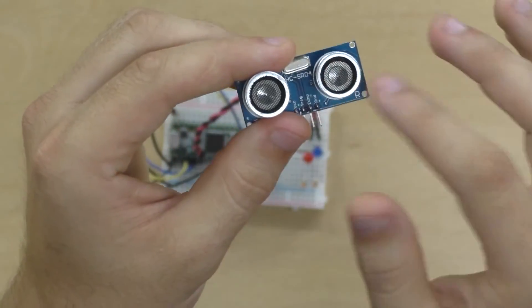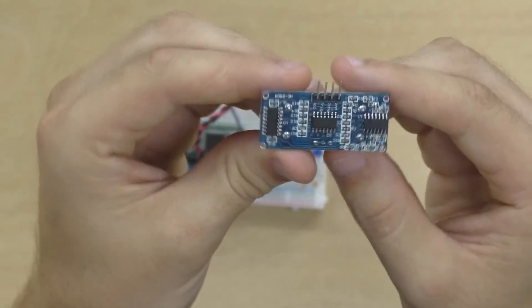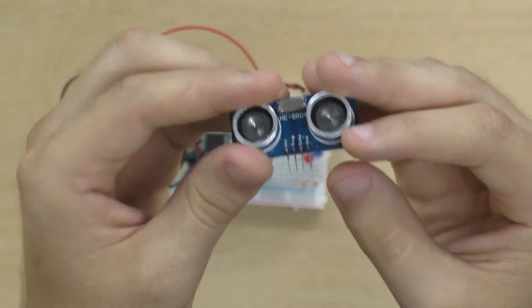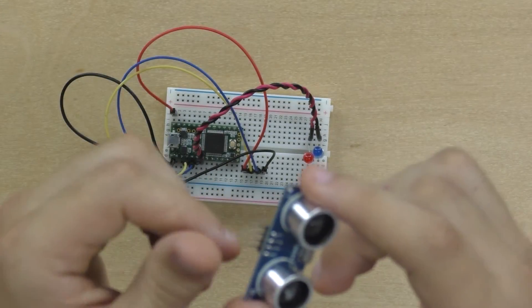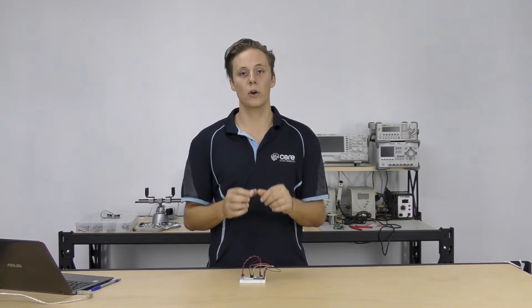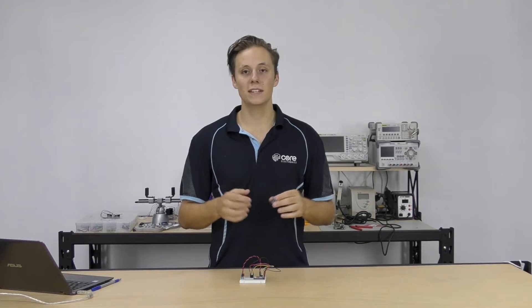Quite simple and quite a simple sensor. It's just got two speaker-like things, some circuitry on the back to control that, and you've got four pins: voltage, ground, trigger, and echo pins. Trigger and echo pins do what they say - one is for emitting and one is for receiving.